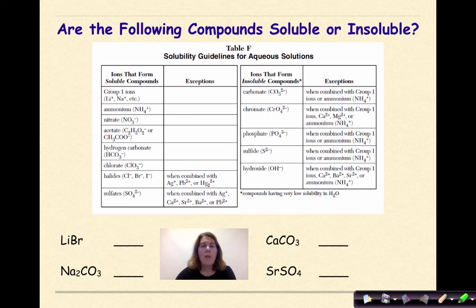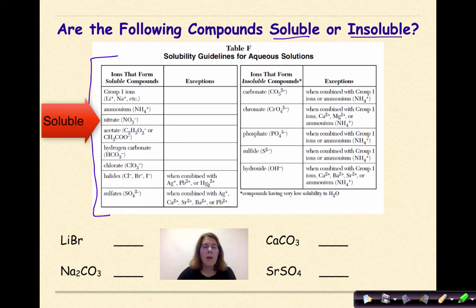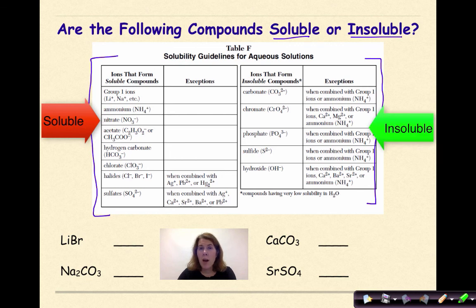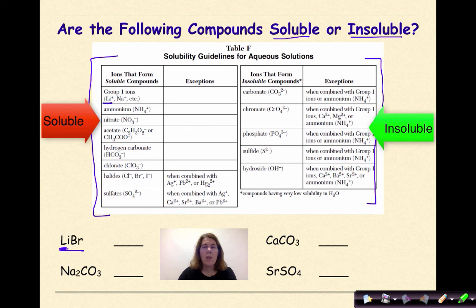Let's ask ourselves: are the following compounds soluble or insoluble? The left box ions form soluble compounds — no solids. The right box ions typically form insoluble compounds — they will form solids. So let's look at LiBr. We see lithium, which is a group one metal. It falls under ions that form soluble compounds. We don't even need to look at the Br — as soon as we see a group one metal, we know it's soluble. So I'll mark it S for soluble.